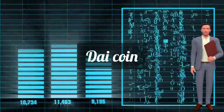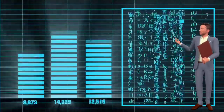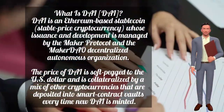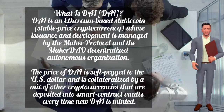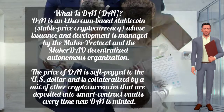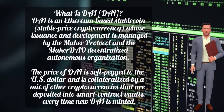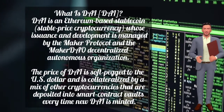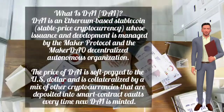We will also cover DAI's expected target price. What is DAI? DAI is an Ethereum-based stablecoin — a stable price cryptocurrency whose issuance and development is managed by the Maker Protocol and MakerDAO, a decentralized autonomous organization. The price of DAI is soft-pegged to the U.S. dollar and is collateralized by a mix of other cryptocurrencies deposited into smart contract vaults every time new DAI is minted.